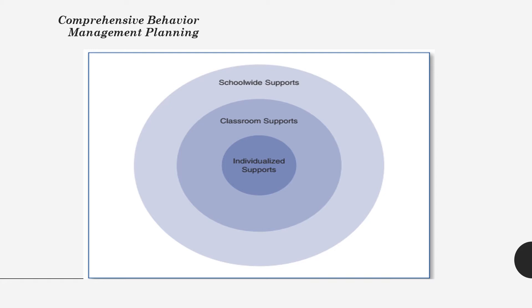Before implementing the behavioral model or strategies, teachers should plan a comprehensive behavior management model or plan for the classroom. Here is a picture or diagram with comprehensive behavior management planning. We believe that behavior management planning must occur at three levels. The smallest circle relates to the implementation of individualized behavior management supports for the most troubled students. Traditionally, behavior management training in special education has occurred at the individualized level. The middle circle is handled from a classroom perspective with individual effective instructional supports.